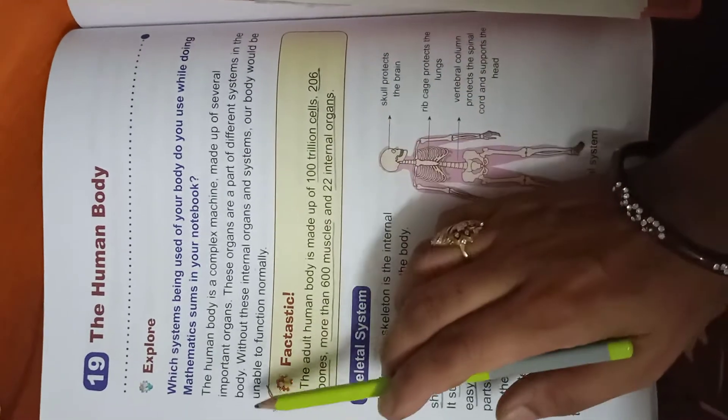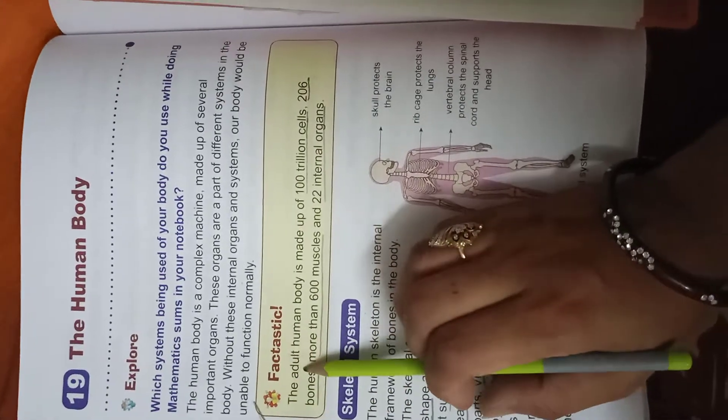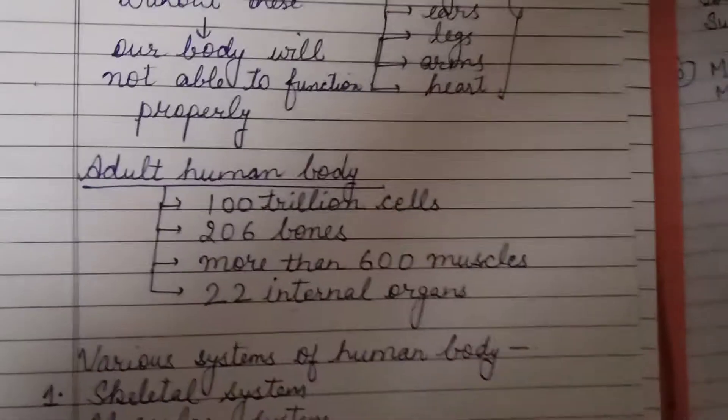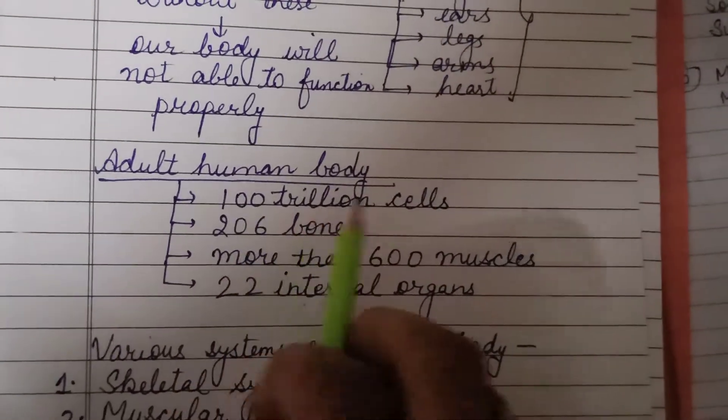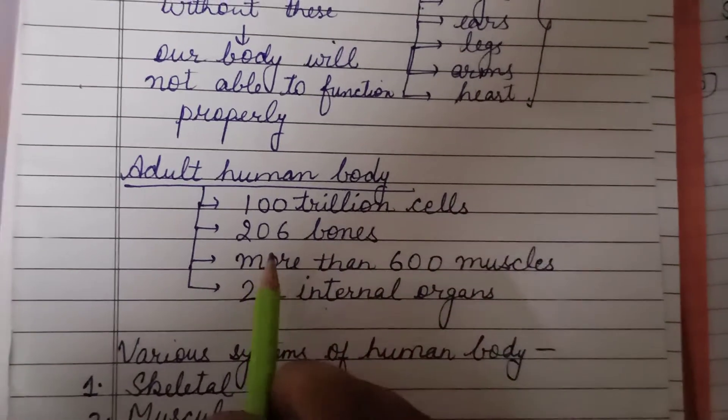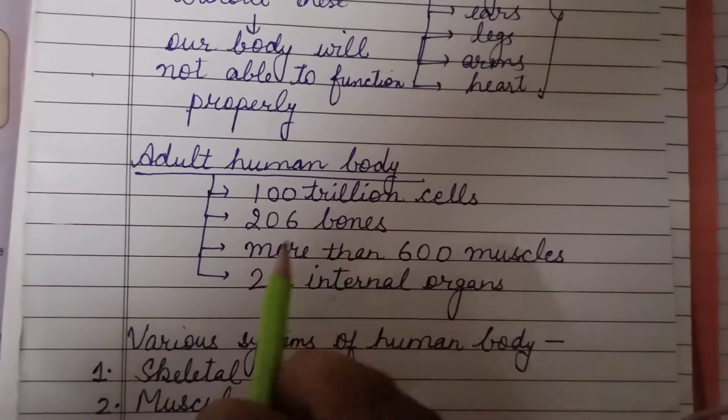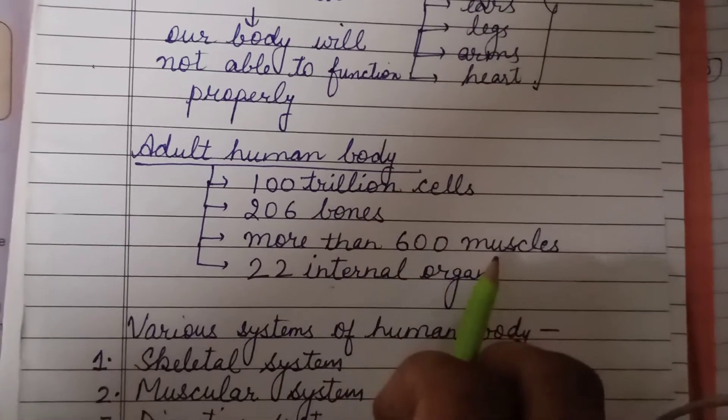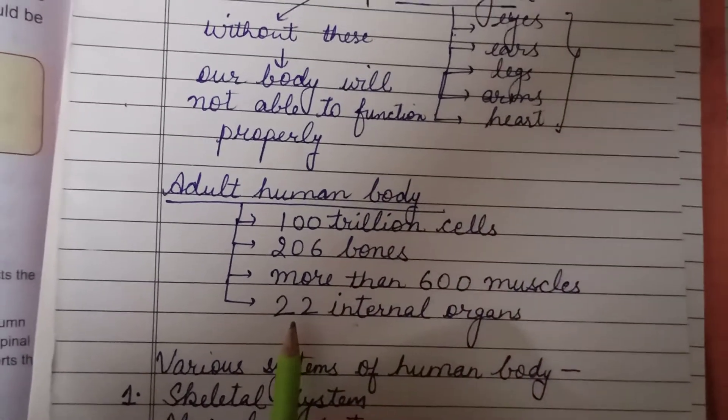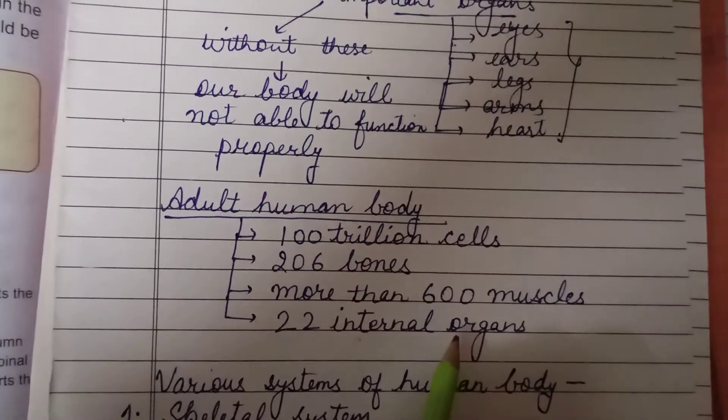Students, you have to learn this. This is very important. The adult human body has 100 trillion cells, 206 bones, more than 600 muscles, and 22 internal organs.